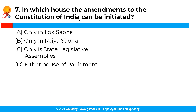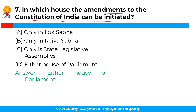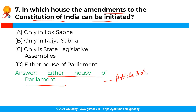The next question is: in which house can amendments to the Constitution of India be initiated? The correct answer is option D, that is either house of parliament. The amendment to the Constitution of India can be initiated in either house of parliament, as enumerated in Article 368.2 of the Constitution of India. The process of constitutional amendment has been taken from the constitution of South Africa.